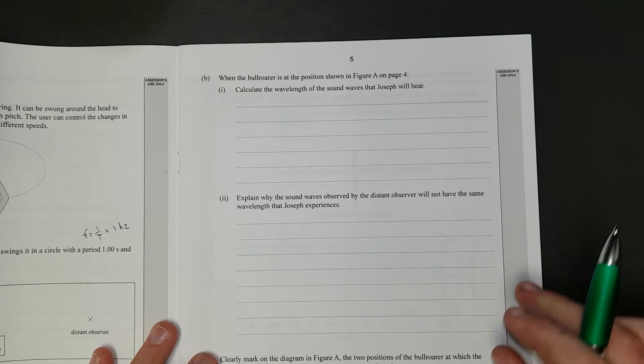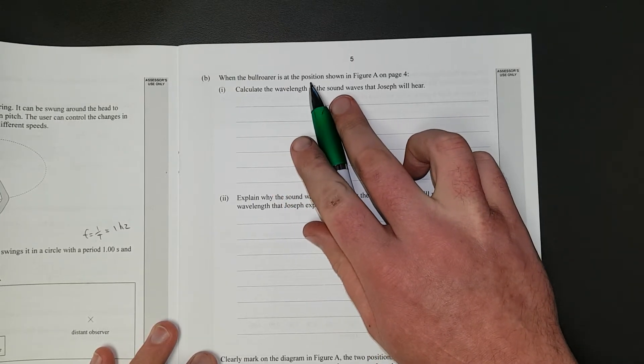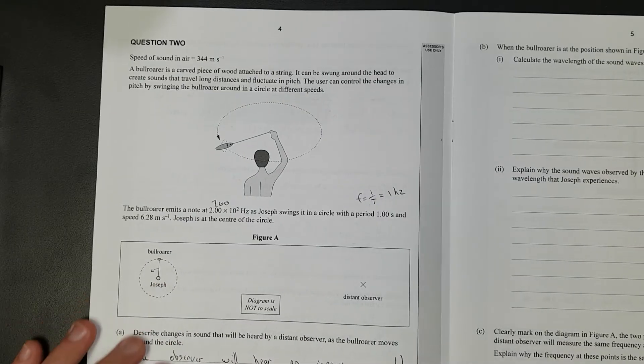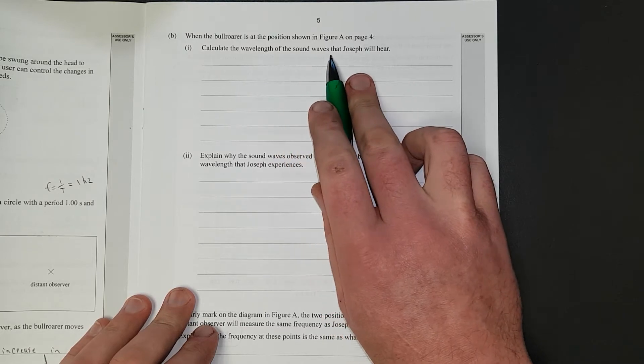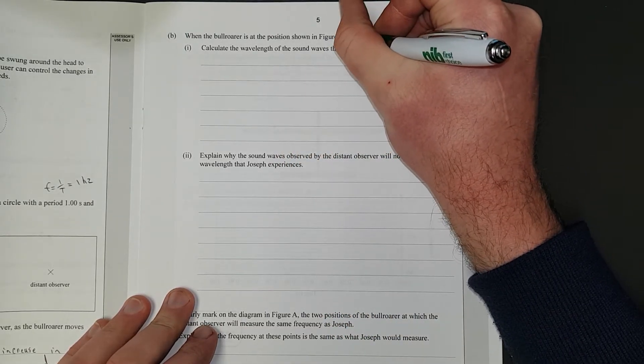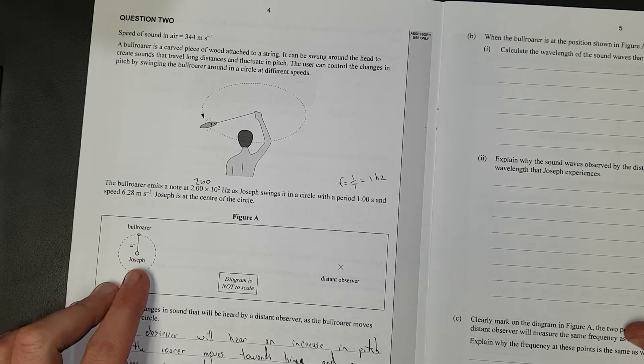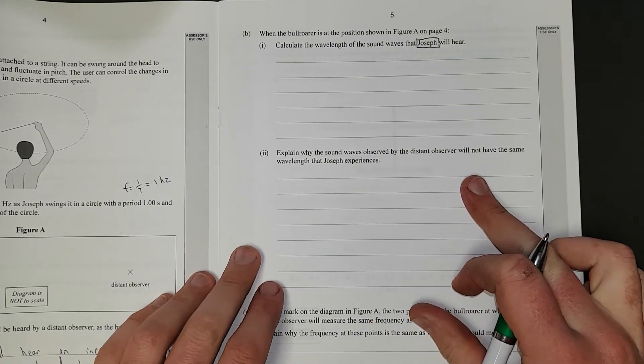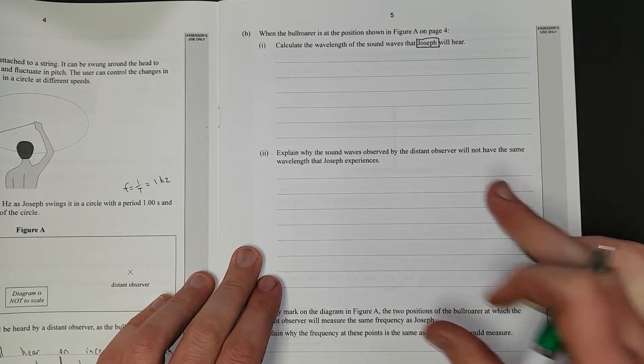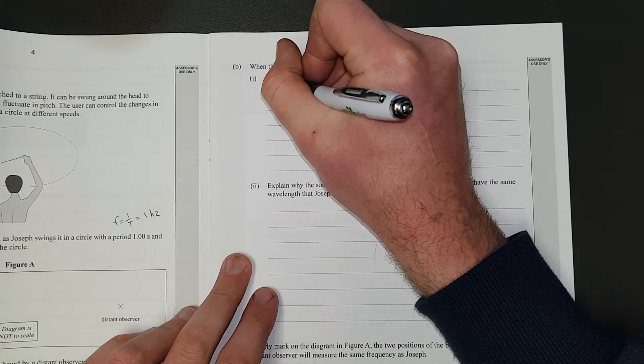So because this is achieved, it's going to be simple. When the bullroarer is at the position shown in figure A, calculate the wavelength of the sound waves that Joseph will hear. Joseph's in the middle. He's just going to hear the same frequency the whole time.